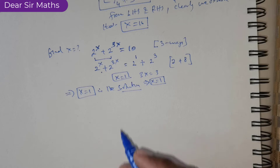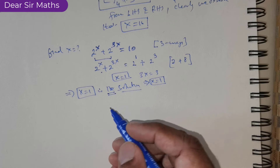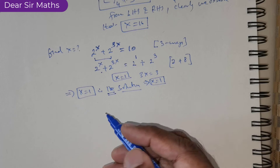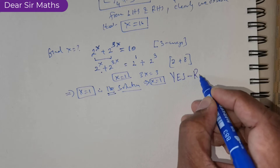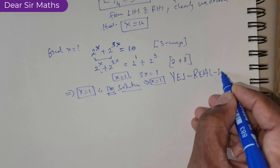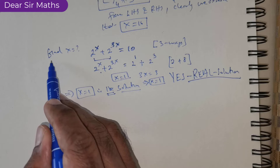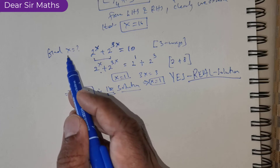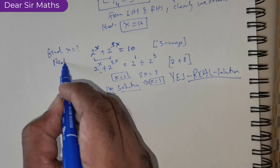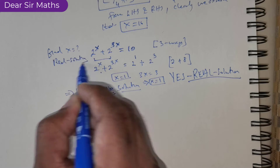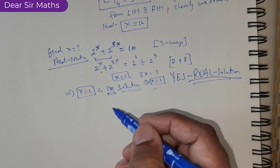Now there are people who will be asking how can you use this solution — meaning, are you saying that x equal to 1 is the only solution? Yes, I am saying x equal to 1 is the only real solution. So if they are asking us to find the value of x expecting only real solutions, then x equal to 1 is the only real solution.